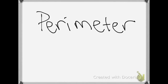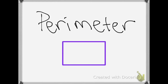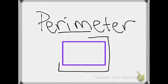We have talked about finding the perimeter of a shape. The perimeter is when we measure the distance around. Remember, the key word is rim — it goes around the outside. It's the perimeter.